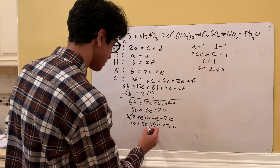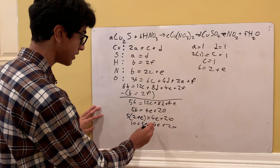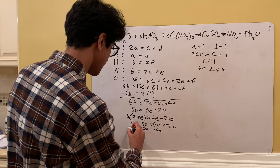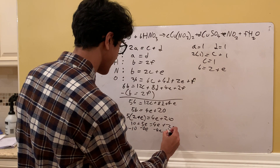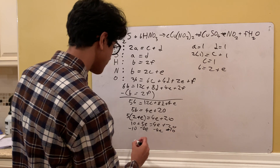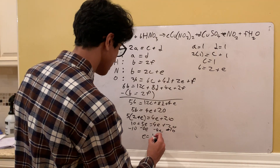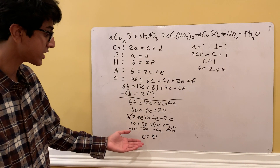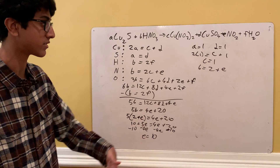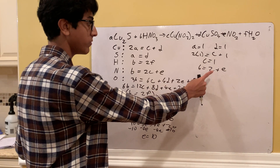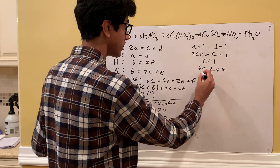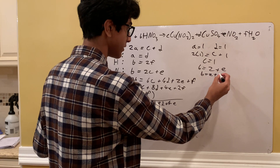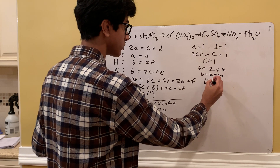Subtracting 4E from both sides and subtracting 10: E = 10. Now that we have E, finding B is easy. From B = 2 + E, we get B = 2 + 10 = 12.